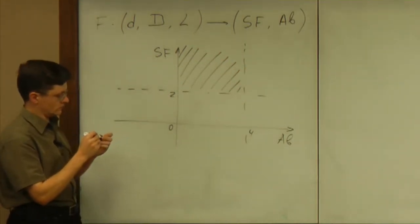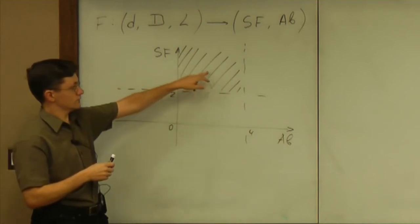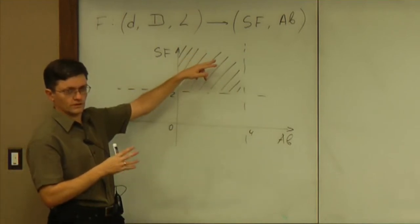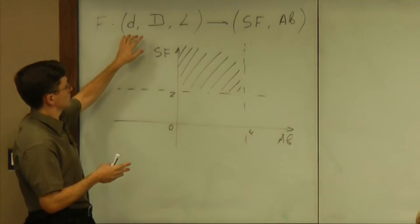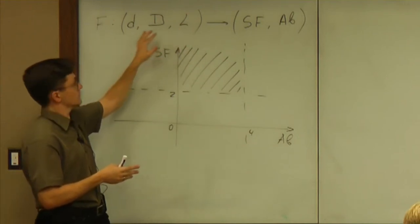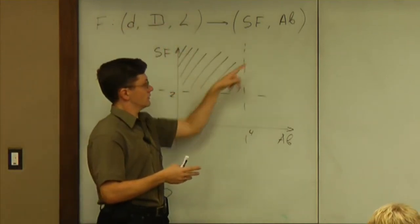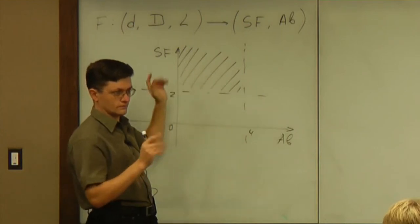And as long as we land anywhere in this region, we are happy, right? So whenever you find three numbers so that the value at those three is a point there, we are fine.